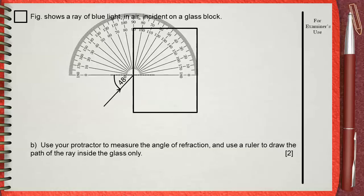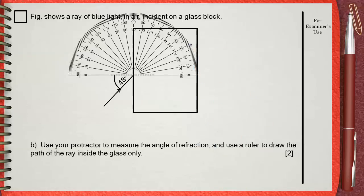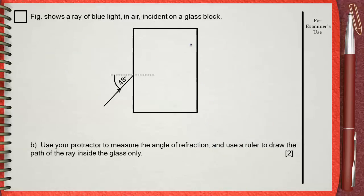Our angle is inside glass, so it's on the right half of the protractor, not the left. Mark the angle 29 using your pencil. Now you can take the protractor away and draw your line using the ruler. This is the angle of refraction, 29 degrees.